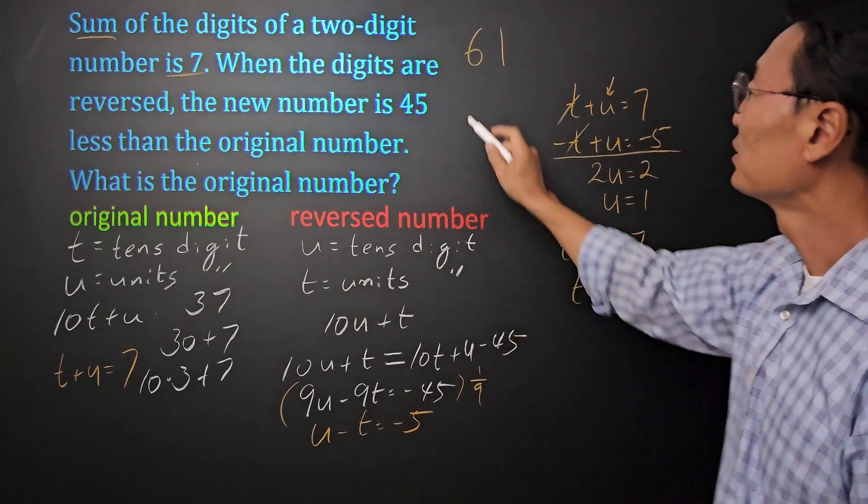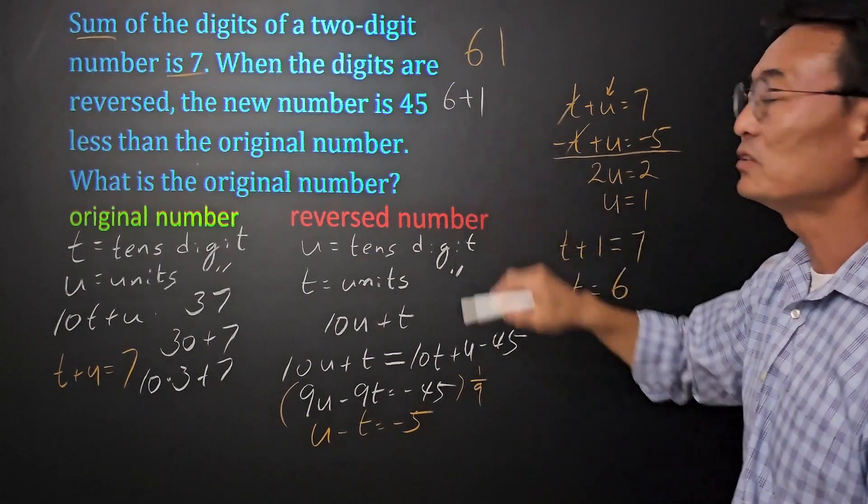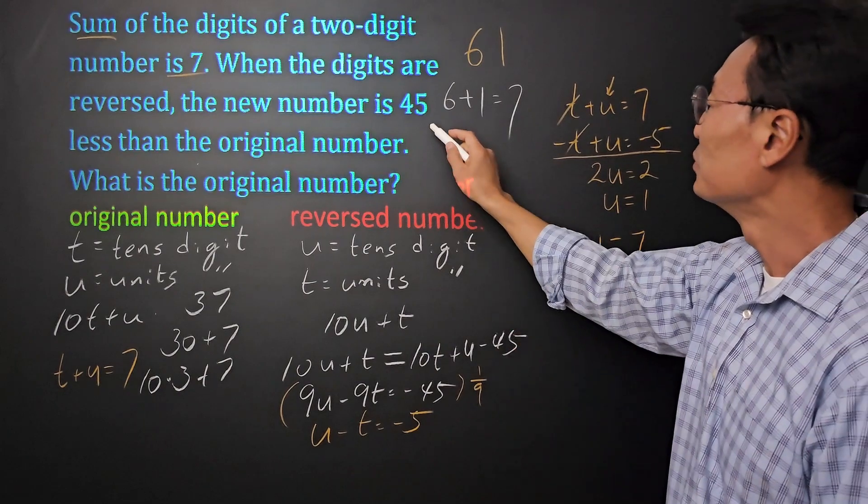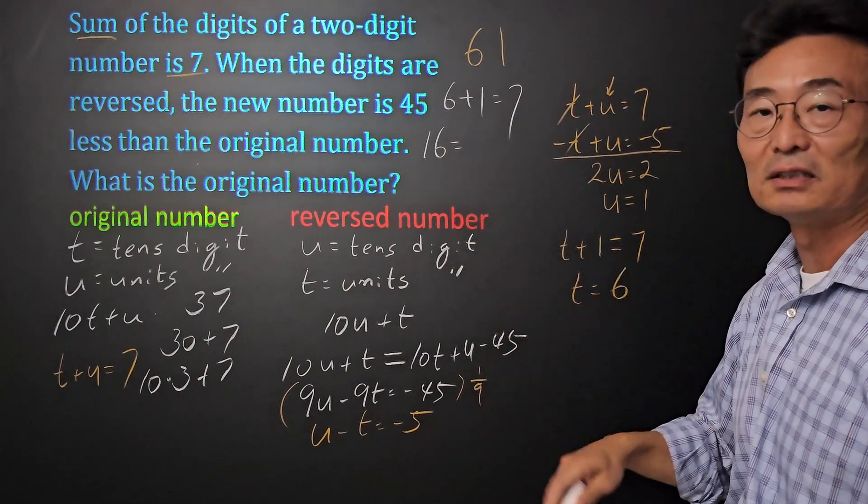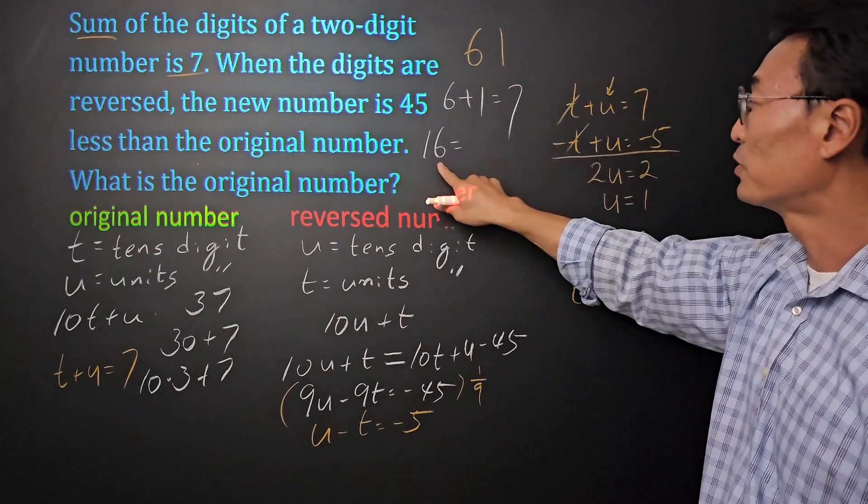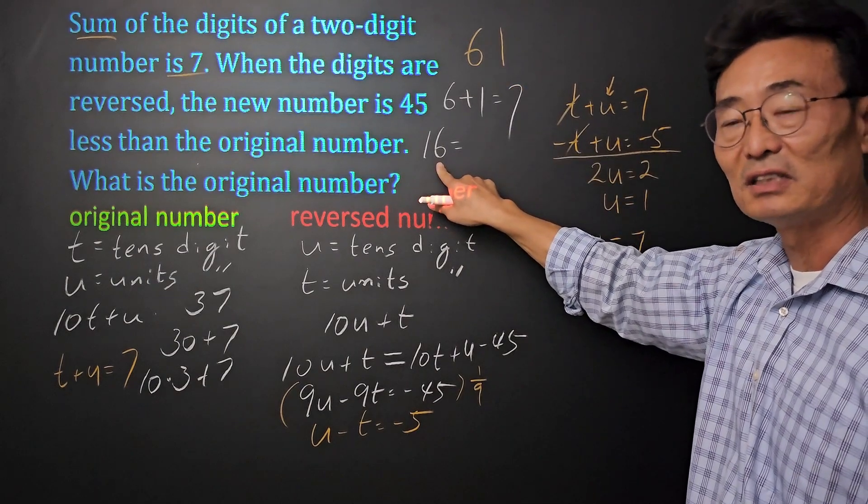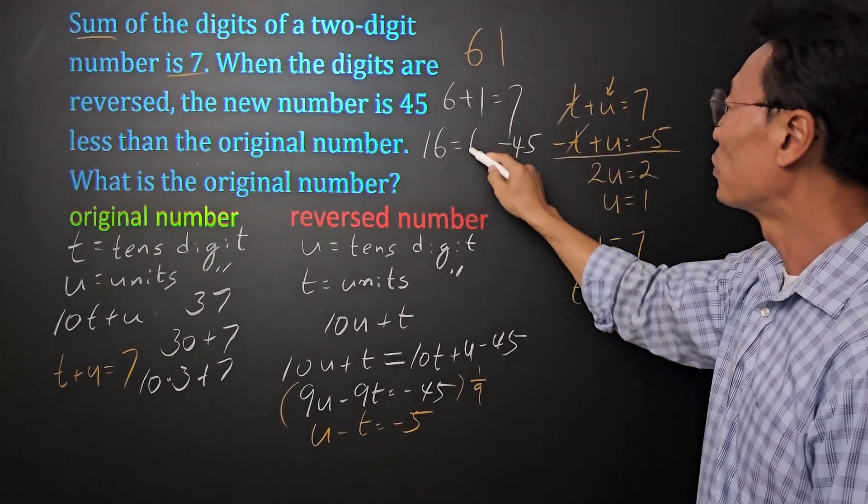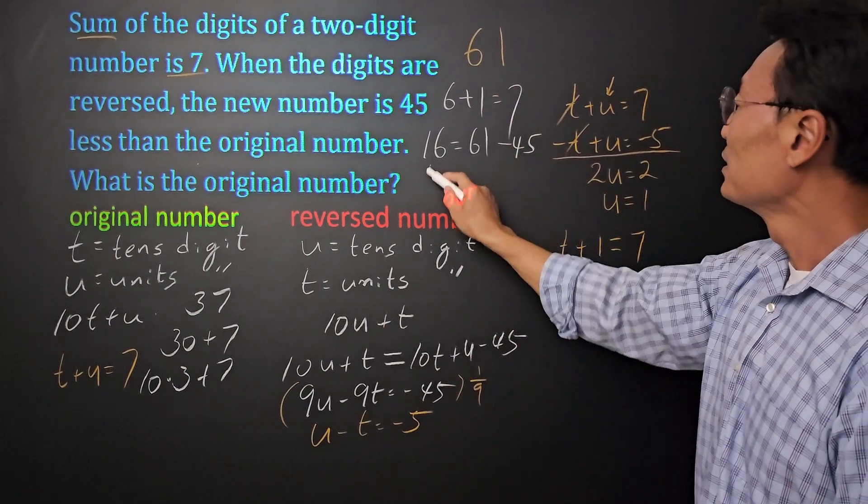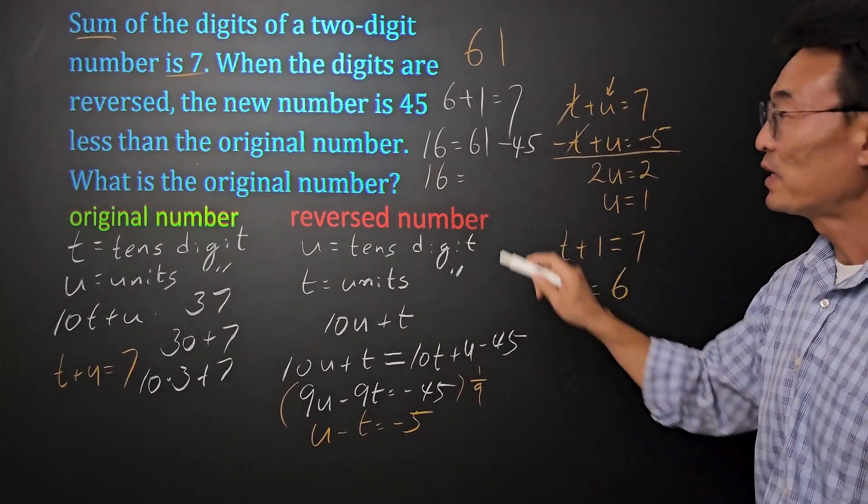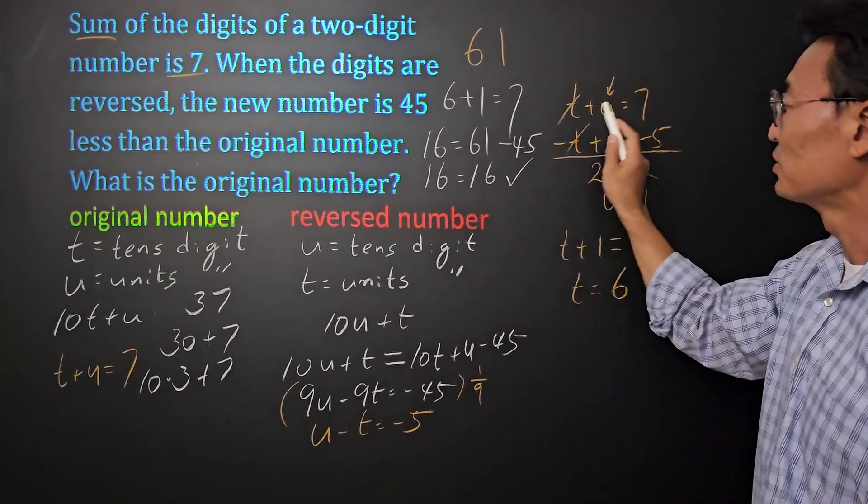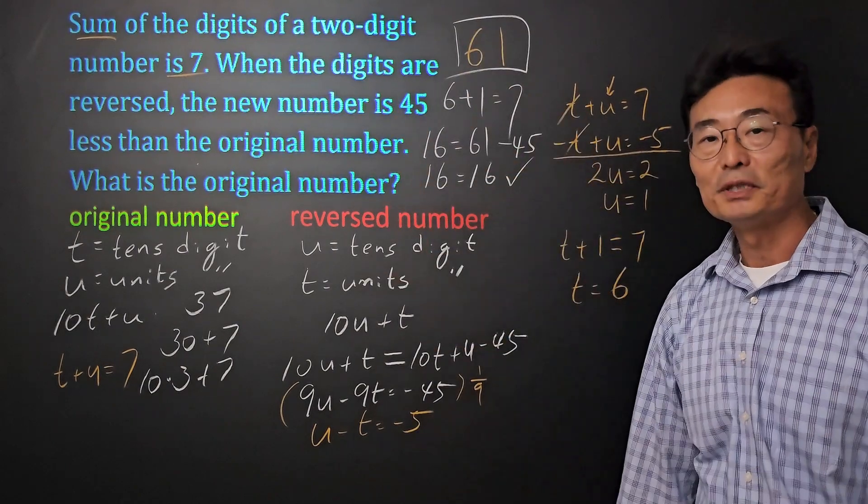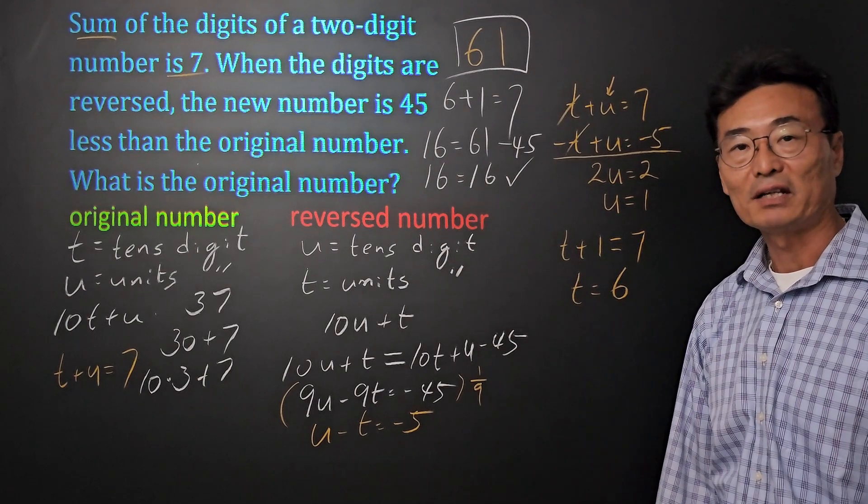Let's go back and check just to make sure. The question told us that if we add the digits, meaning 6 and the 1, we get a 7 out of that. And it also said the reverse number, or the 16—again, 61 reversed or the new number is going to be 16—will be 45 less than the original number or 61. Does 16 equal 61 minus 45? Yes it does, so that checks out as well, meaning 61 is going to be the original number, our final and correct answer.